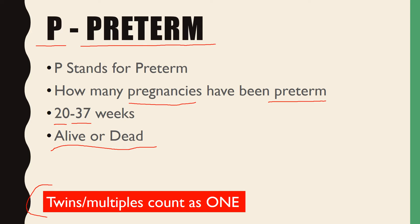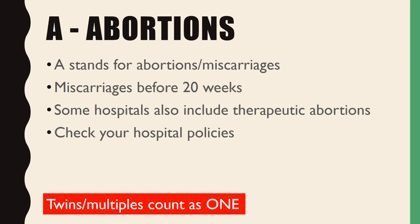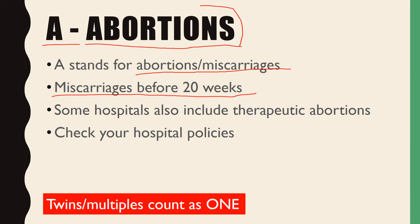It's important to remember that preterm starts at 20 weeks, because the next category covers what happens before that. A stands for Abortions — and abortions here doesn't carry the same political meaning as in broader society. It stands for abortions or miscarriages, meaning losses before 20 weeks. Some hospitals also include therapeutic (elective) abortions under this category. I recommend checking your hospital's policies for your clinical placement.